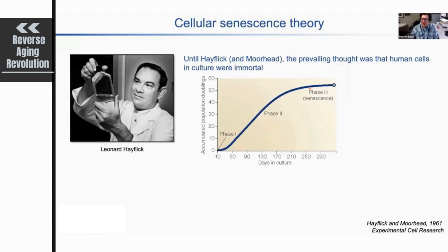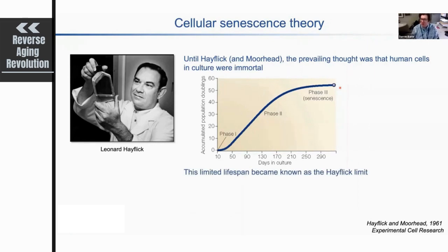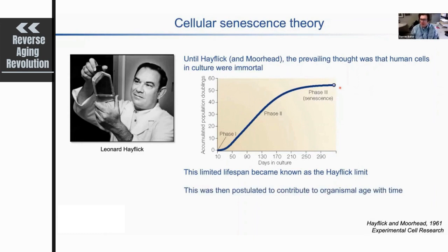What Hayflick found is that after about 50 to 60 population doublings, these fibroblasts entered a state they called senescence — an irreversible growth arrest. The cells remained alive as long as fresh media was replenished, but there was no further division. This became known as the Hayflick limit, and it is now well accepted that normal cells have a finite capacity for division before reaching this limit.